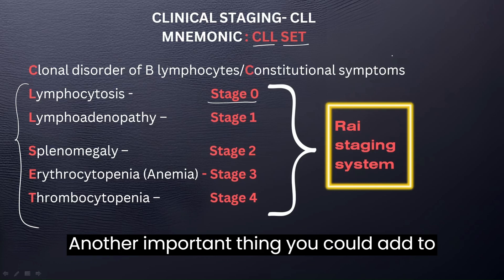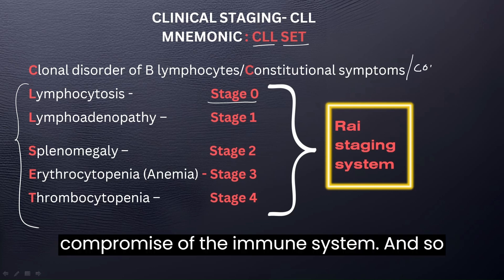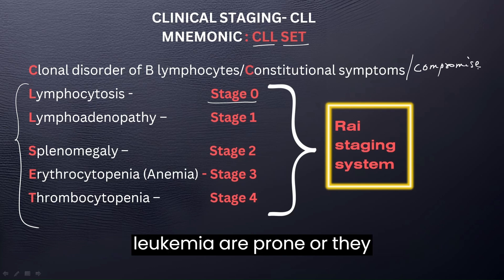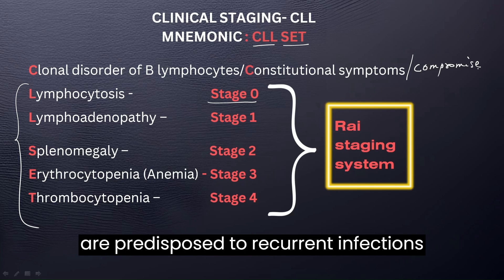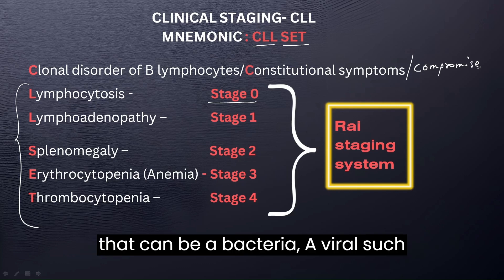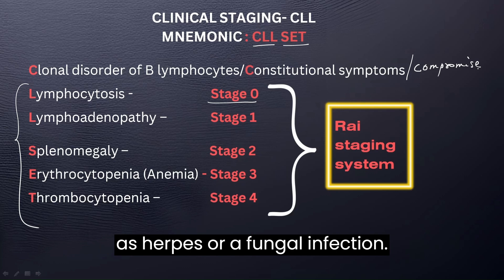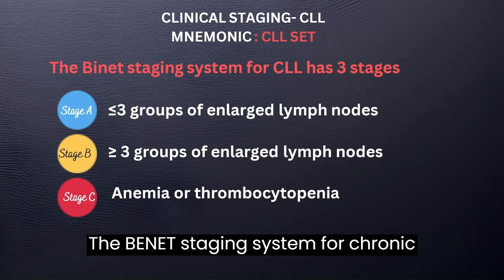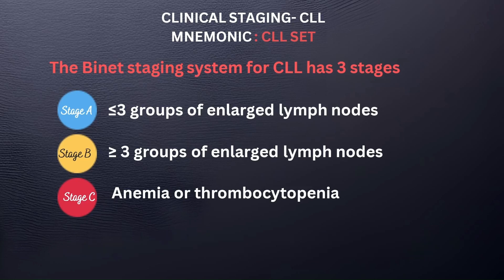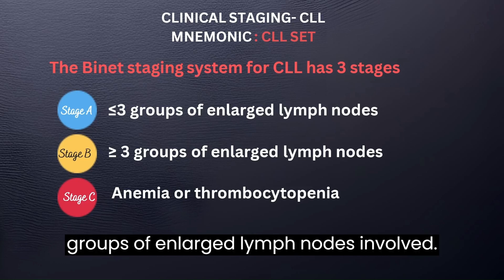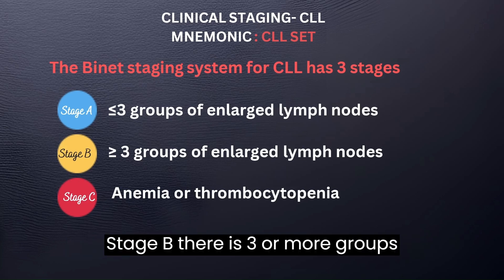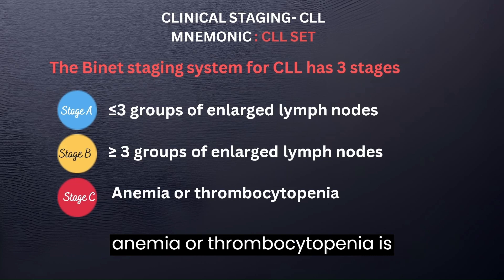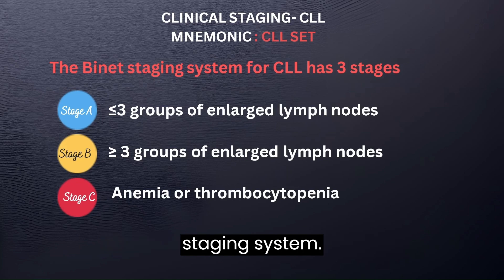Another important addition to the mnemonic is compromise — compromise of the immune system. Patients with chronic lymphocytic leukemia are predisposed to recurrent infections that can be bacterial, viral such as herpes, or fungal, because of the incompetent immunoglobulins produced. The Binet staging system has three stages: Stage A has three or fewer groups of enlarged lymph nodes involved; Stage B has three or more groups; and Stage C is classified by anemia or thrombocytopenia.